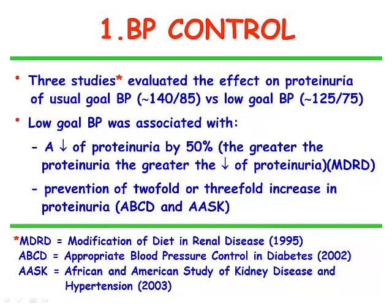First, blood pressure. Three large studies evaluated the effect on proteinuria of usual goal blood pressure — roughly 140/85 — versus low goal blood pressure — 125/75. Low goal blood pressure was associated with a reduction of proteinuria by 50%, and the greater the proteinuria, the greater the reduction in the MDRD study. In the other two studies, reduction of blood pressure to the low goal prevented a two-fold or three-fold increase of proteinuria.